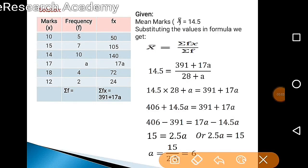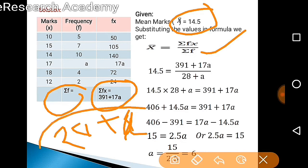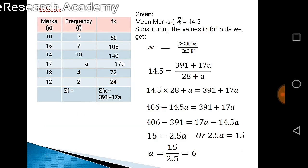We need to substitute these all things, whether it is sigma Fx, sigma F, or the given 14.5 in our formula x bar equals sigma Fx upon sigma F. We calculated sigma F equals 28 plus A, sigma Fx is 391 plus 17A, and x bar is 14.5. So substitute these values: 14.5 equals 391 plus 17A upon 28 plus A.